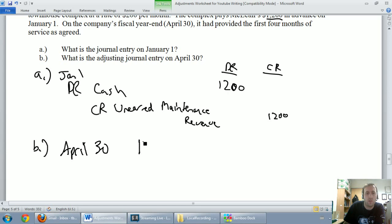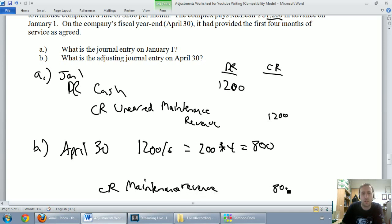So again, it was $1,200 for a six month contract, $200 a month. It actually said that in the question, $200 a month. And we've done January, February, March, April, we've done four months worth of work. We've done $800 worth of work, meaning we've earned $800 worth of revenue. So whenever I earn revenue, I know it's a credit. Revenues have to be credited. I'm going to credit maintenance revenue, not unearned maintenance revenue. This revenue has been earned, maintenance revenue, and I've earned $800 worth.